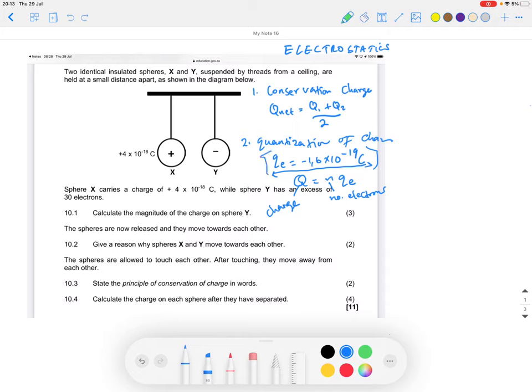If you are asked to calculate the charge, you will be given the number of electrons, so you simply multiply the number of electrons by qe. They can also ask you to calculate the number of electrons when they've given you the amount of charge. In that case, you make n the subject of the formula: n equals q over qe.